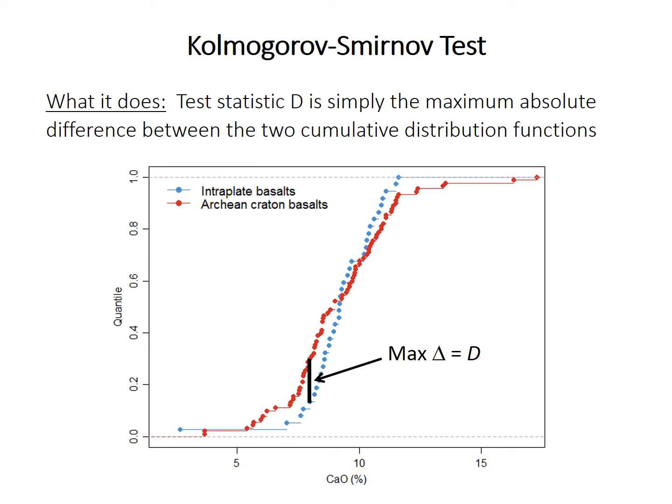The test statistic, given the term D, is quite simple. It's just the maximum absolute difference between the two cumulative distribution functions. So at whatever point those two functions are furthest apart, that distance in probability is the statistic D.